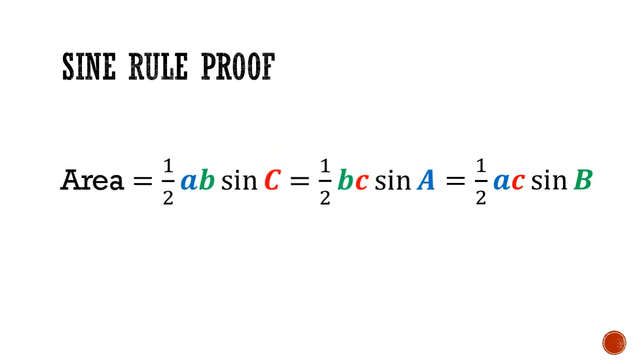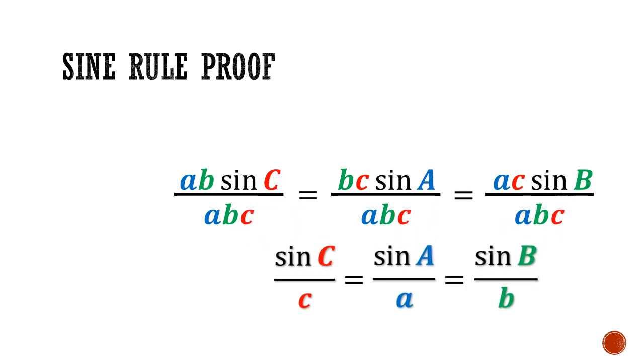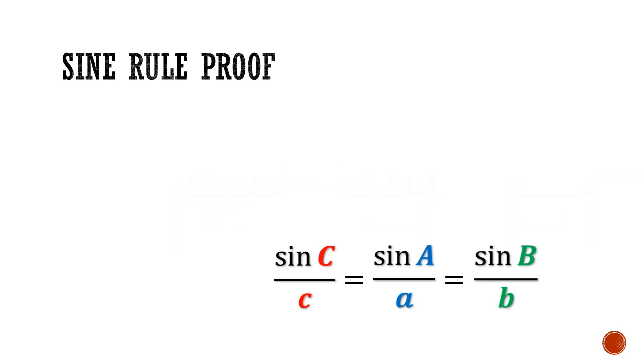Equating the three area formulas together, we can first cancel out the coefficients of half. Next, we can divide all these three terms by the term ABC. By canceling away the common factor, we get a version of the sine rule that states sine C over C equals sine A over A equals sine B over B.